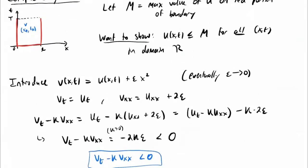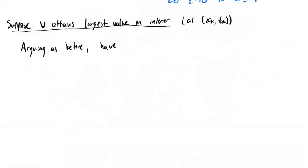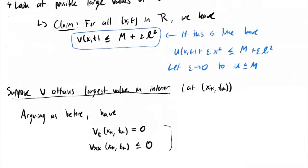Arguing as before, we have V_t of x-star, t-star equal to zero. And we have V_xx of x-star, t-star less than or equal to zero, because it's concave down at a maximum — the second derivative is less than or equal to zero. Let's use these in combination with our equation for V derived earlier. From before, V_t is always strictly less than k times V_xx. So plugging in these particular points: V_t of x-star, t-star is always strictly less than k times V_xx of x-star, t-star.